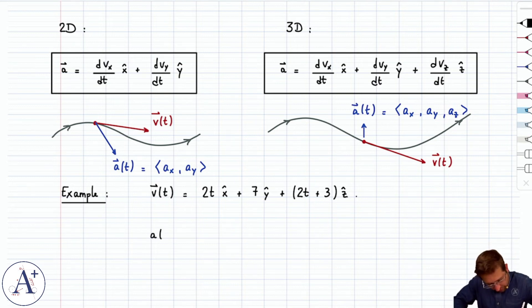So, to pick up where we left off, this is v of t. To get the acceleration vector, we're going to take the derivative with respect to time of each component one at a time. So, 2t differentiates into 2 along x hat plus, well, 7's constant, so derivative is 0. So, 0y hat, or you don't even write it. And then, 2t plus 3 differentiates into 2, carried by z hat.